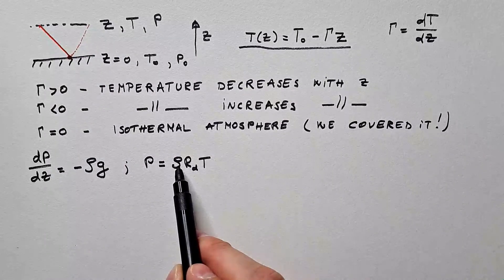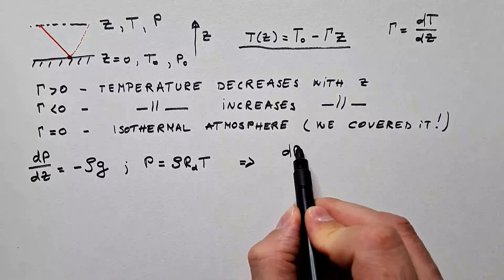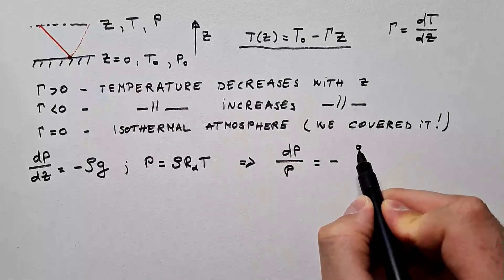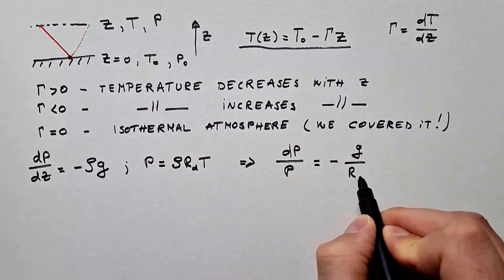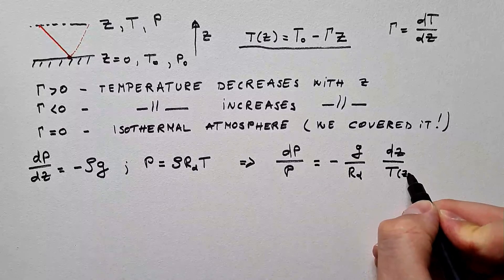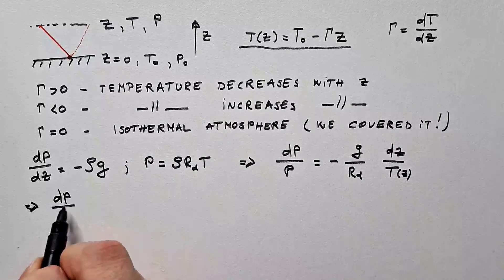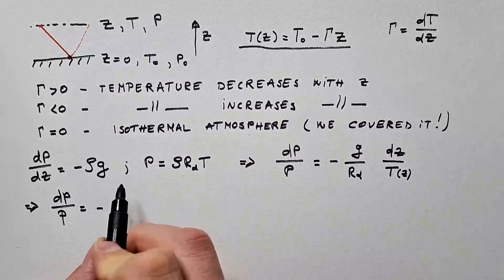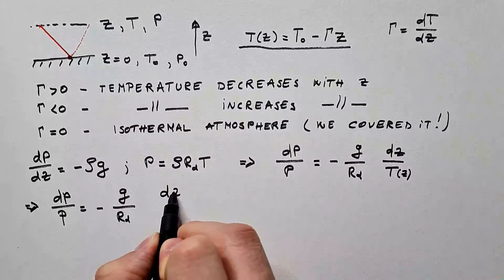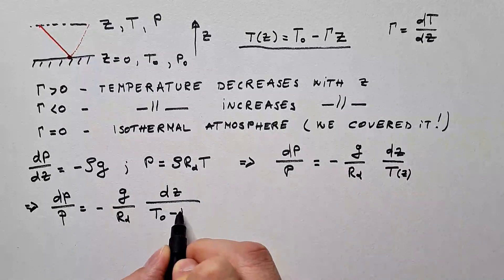Expressing ρ from here, and inserting in the hydrostatic equation, we get that dP over P is equal negative g over Rd dz over T, where T is function of z, of course.